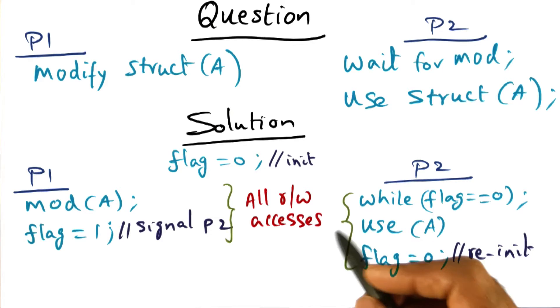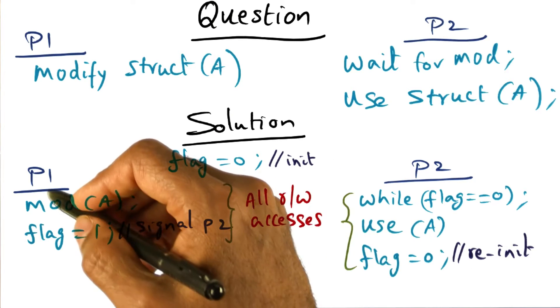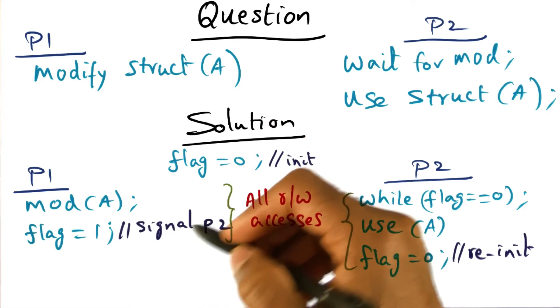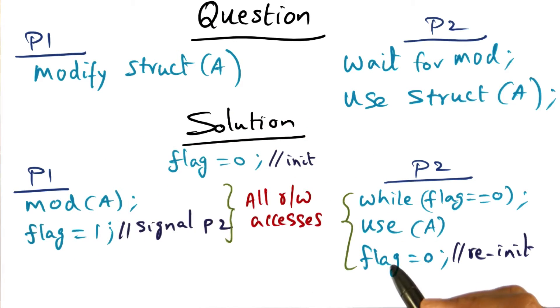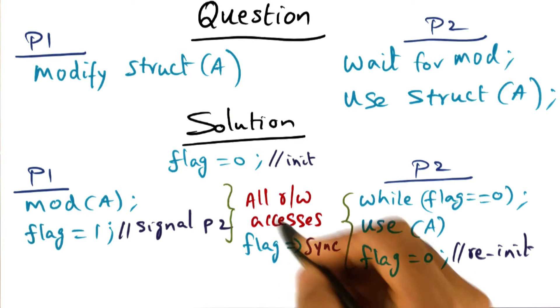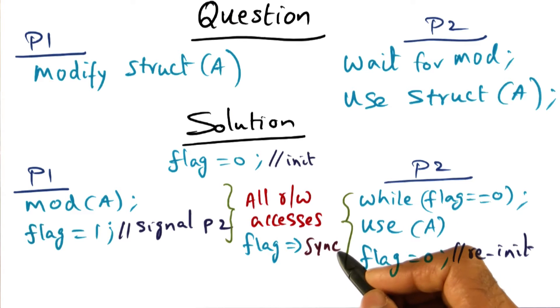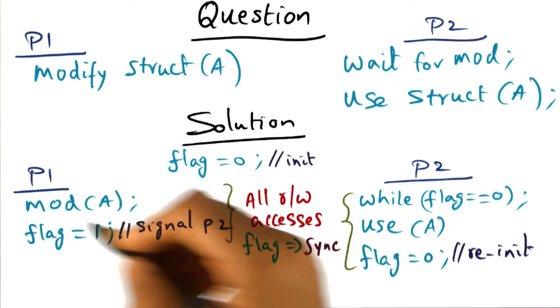But there is a difference between the way the program uses this flag variable versus this data structure. The flag variable is being used as a synchronization variable, and that's a secret that only this P1 and P2 know about.